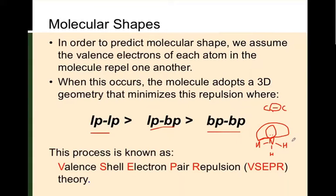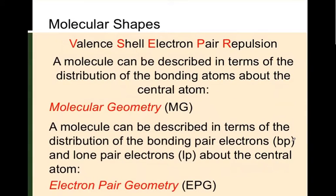The governing theory for this is called Valence Shell Electron Pair Repulsion Theory, or VSEPR. It's a very well-known and common theory. You'll hear about it now and again in organic chemistry. A molecule can be described in terms of the distribution of the bonding atoms about the central atom — this is called molecular geometry.